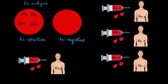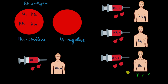Now the last case: RH positive blood donated to an RH negative person. The RH positive blood has the RH antigen, but the RH negative recipient does not have this antigen. Their body recognizes it as foreign and produces antibodies against it. The antibodies react with the RH antigen, causing blood clotting and severe reactions. So RH positive donated to an RH negative person is an incompatibility.